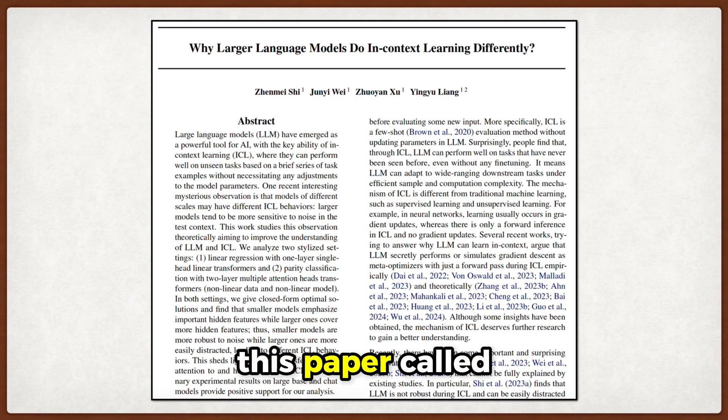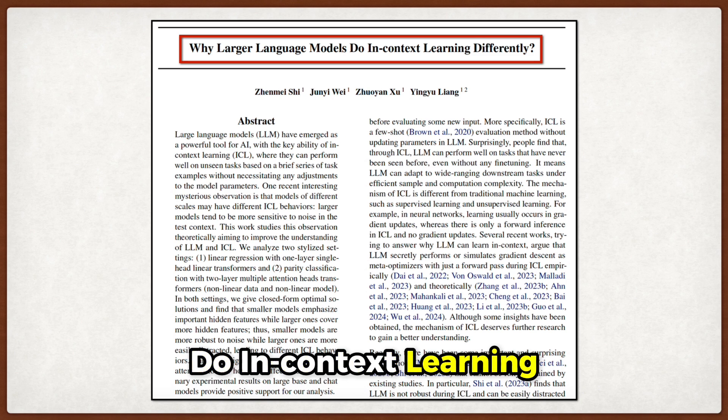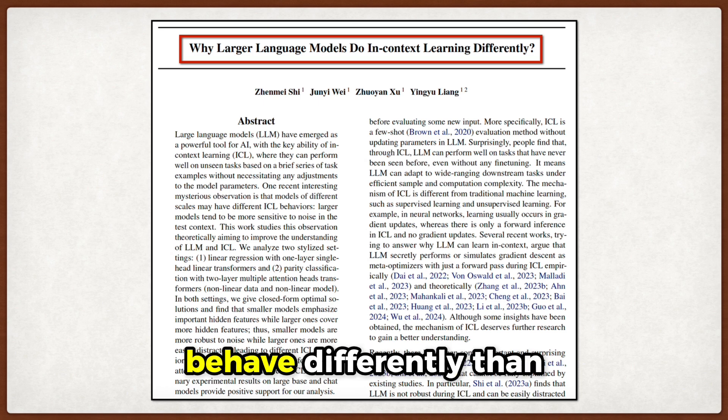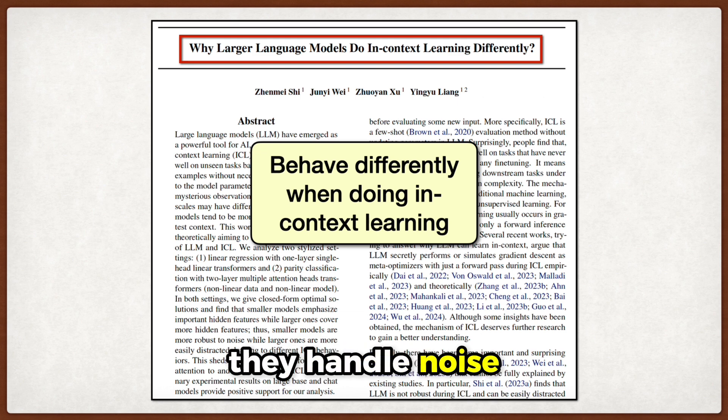So today, we're looking at this paper called Why Larger Language Models Do In-Context Learning Differently, which tries to understand why bigger models like GPT-4 behave differently than smaller ones when doing in-context learning. Spoiler alert: it has to do with how they handle noise and which features they pay attention to.